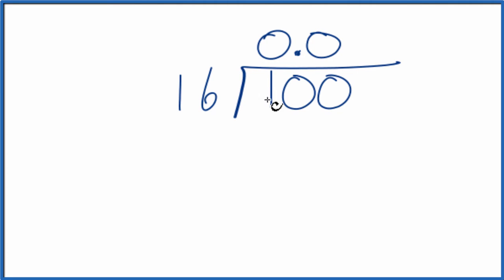It seems like 16 would go into 100 about 6 times. Let's try that. 6 times 16 is 96. So 100 minus 96, that gives us 4.